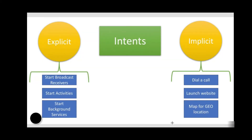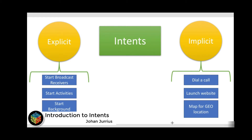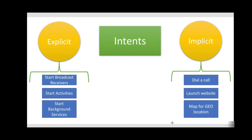In the next set of videos we will look at intents. Three of the core components of an application — activities, services, and broadcast receivers — are activated through messages called intents. An intent object is a passive data structure holding an abstract description of an operation to be performed, or in the case of broadcasts, a description of something that has happened and is being announced. The Android system finds the appropriate activity, service, or set of broadcast receivers to respond to the intent, instantiating them if necessary.